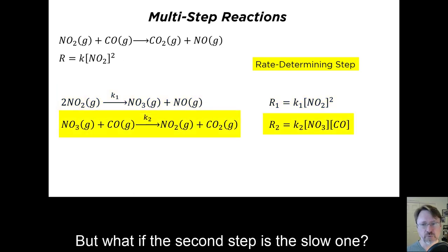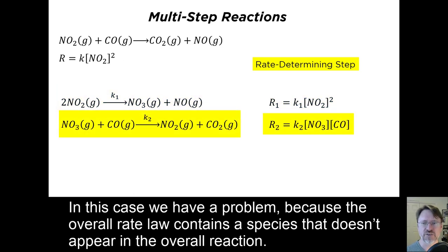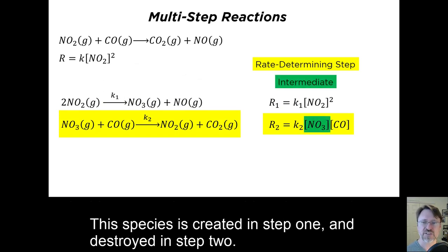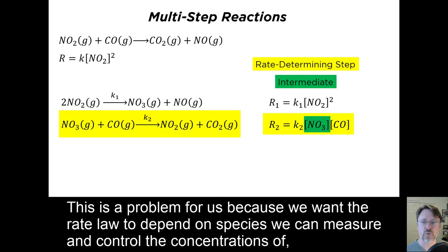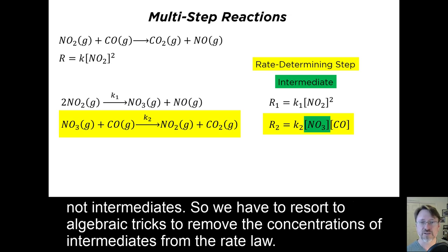But what if the second step is the slow one? In this case, we have a problem, because the overall rate law contains a species that doesn't appear in the overall reaction. This species is created in step one and destroyed in step two. Such a species is called an intermediate, because it shows up briefly, intermediately, within the reaction mechanism. This is a problem for us, because we want the rate law to depend on species that we can measure and control the concentrations of, not intermediates. So we have to resort to algebraic tricks to remove the concentrations of intermediates from the rate law.